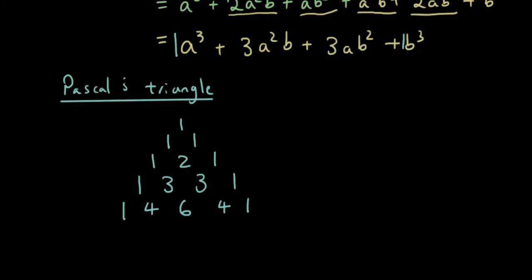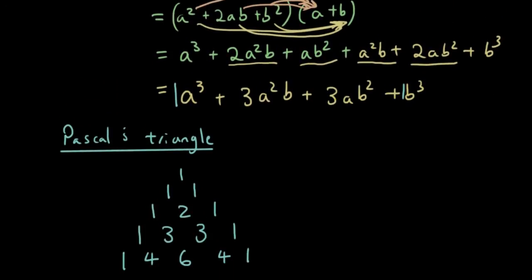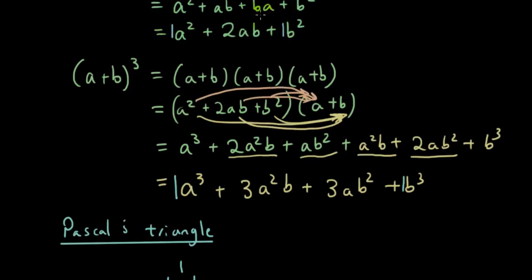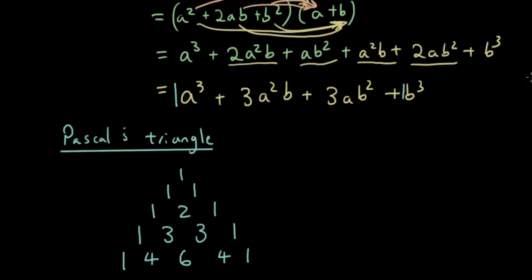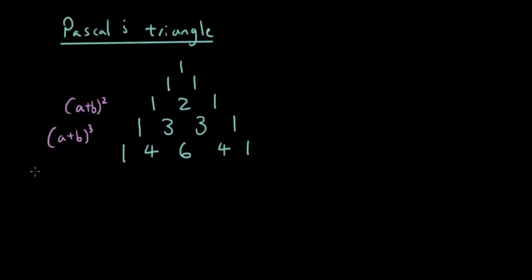So you can see here that the third row, 1, 2, 1, corresponds to a plus b squared, giving 1a squared plus 2ab plus 1b squared. The next row, 1, 3, 3, 1, corresponds to a plus b cubed, and the following row will be a plus b to the power of 4.